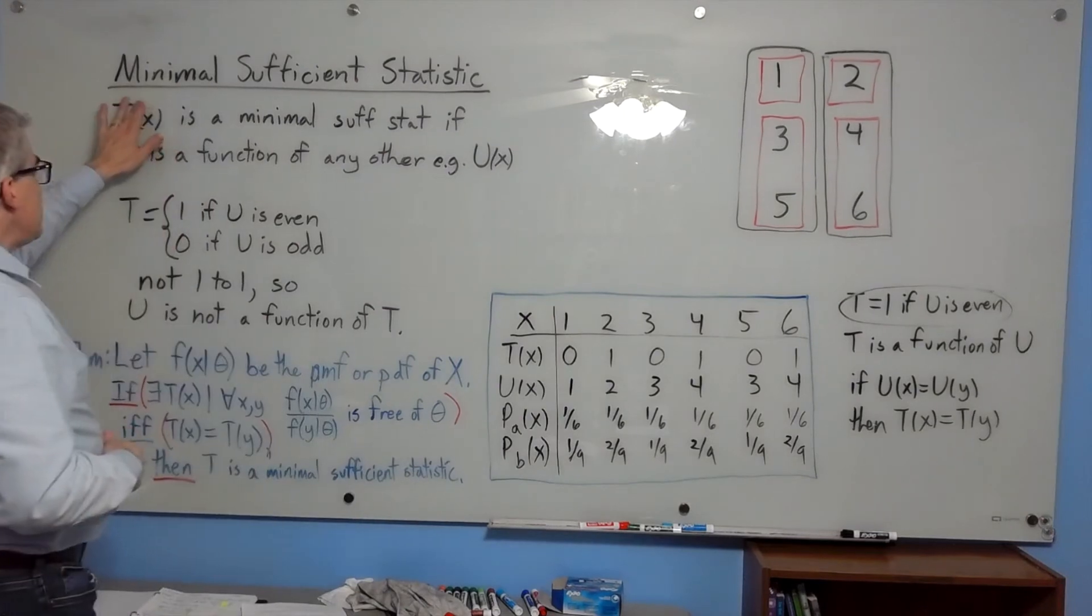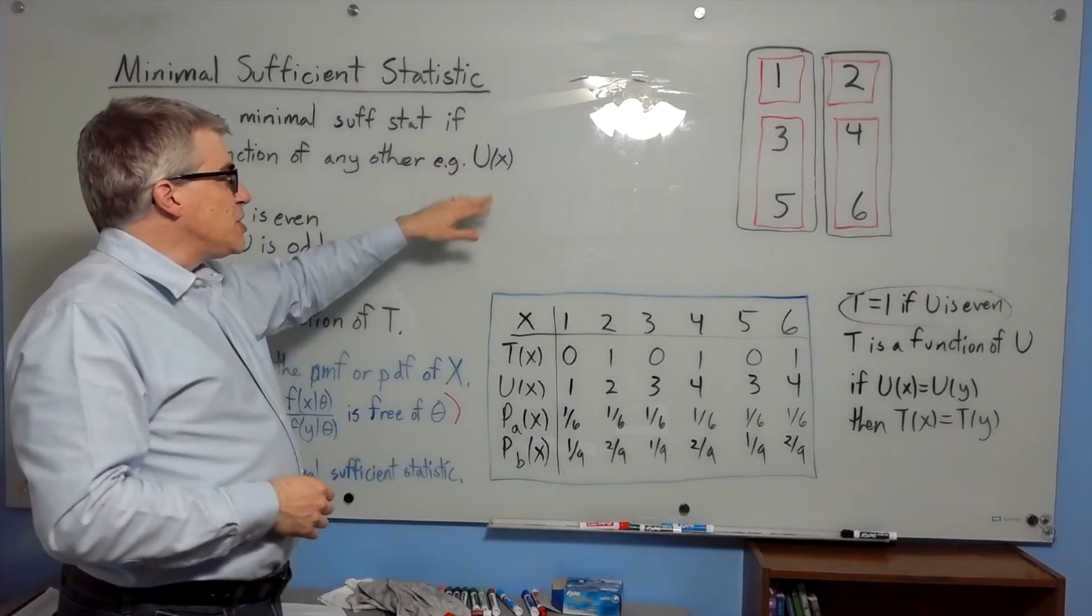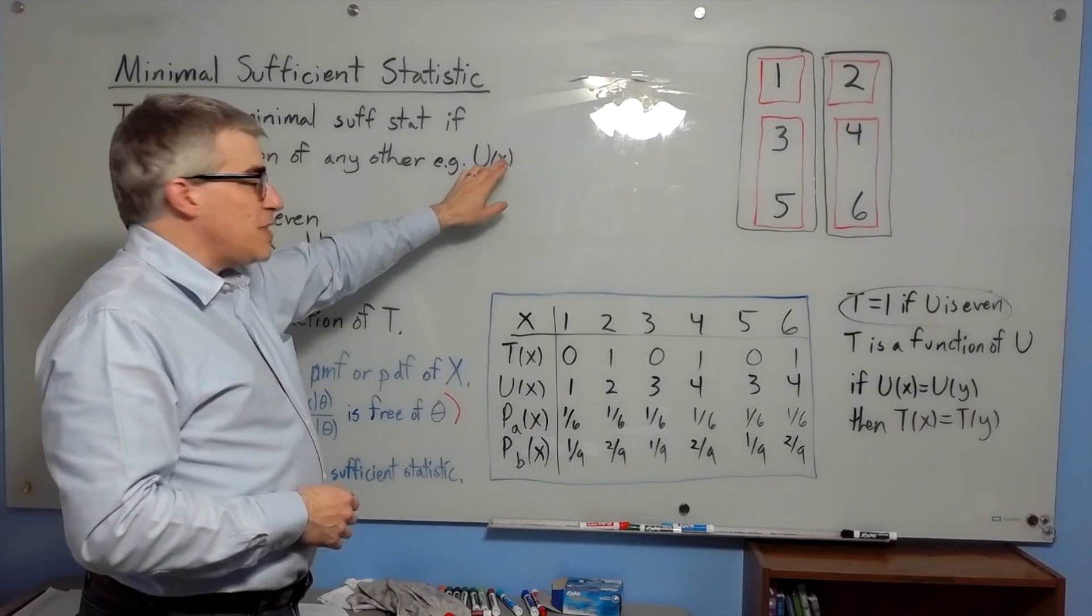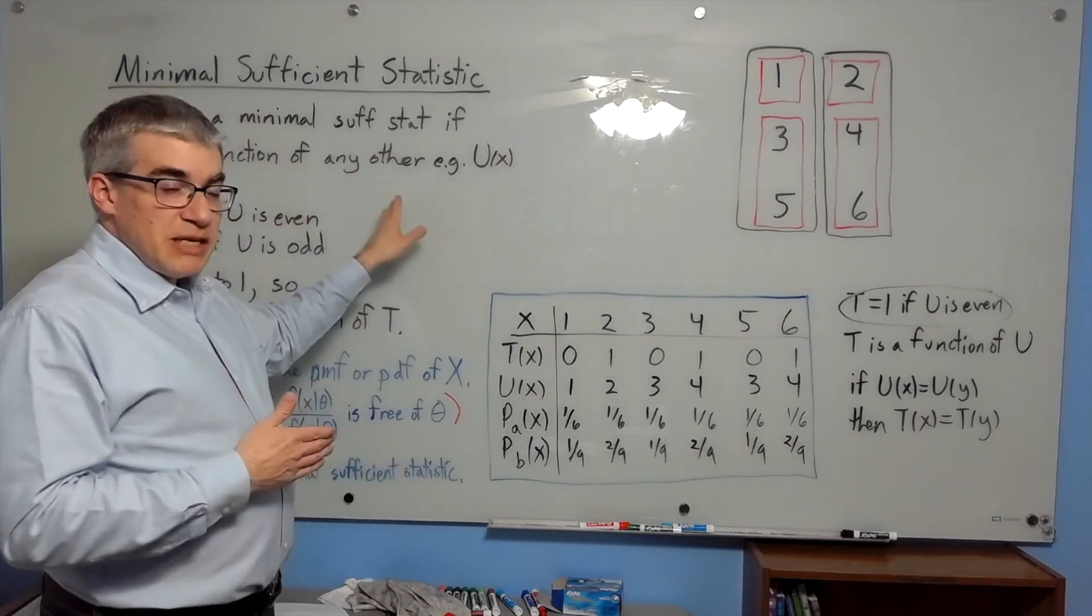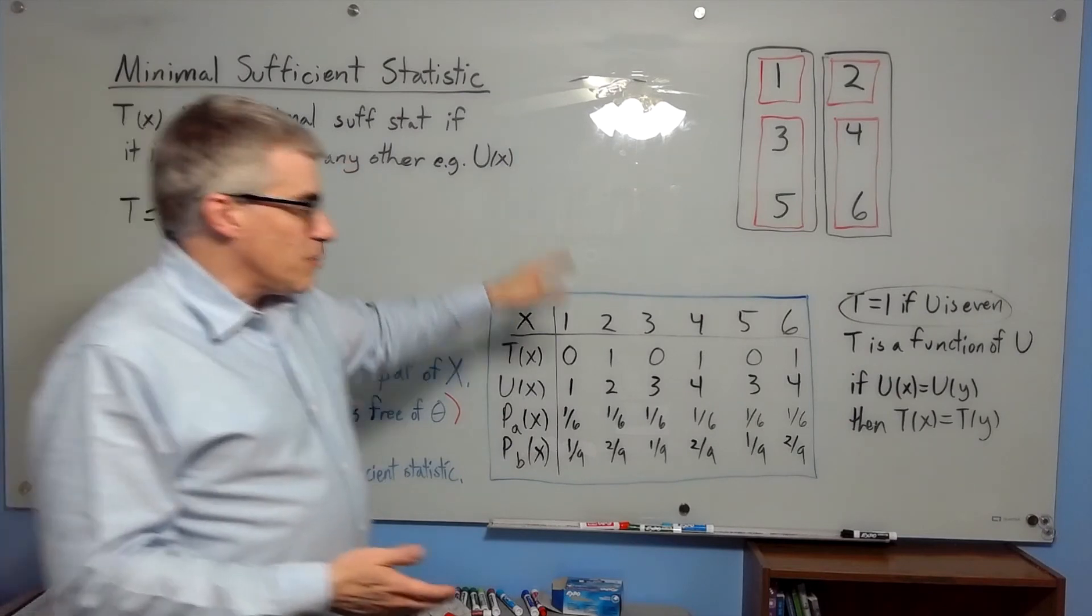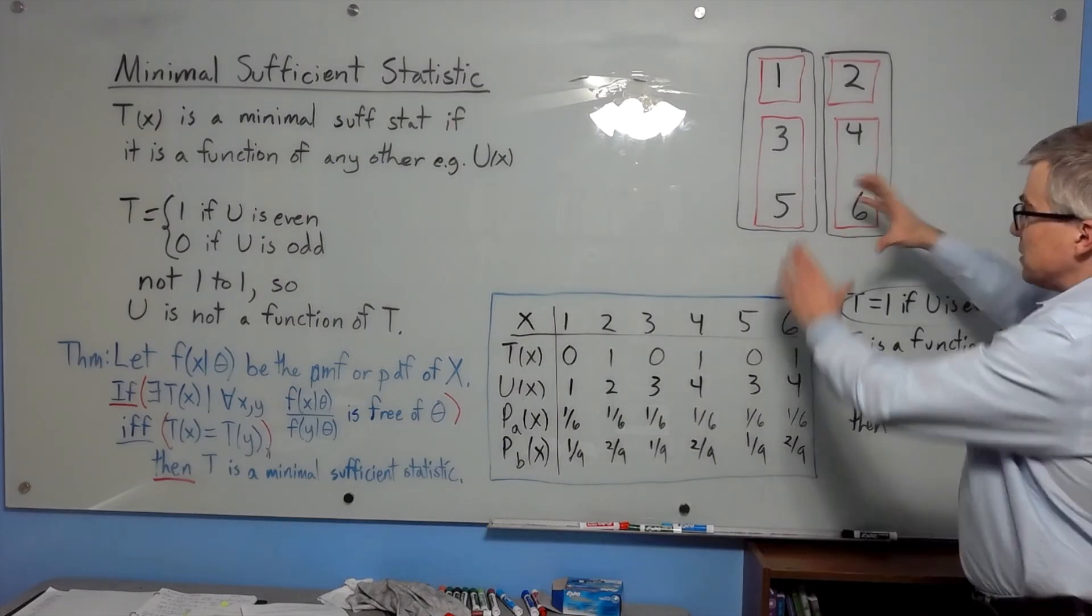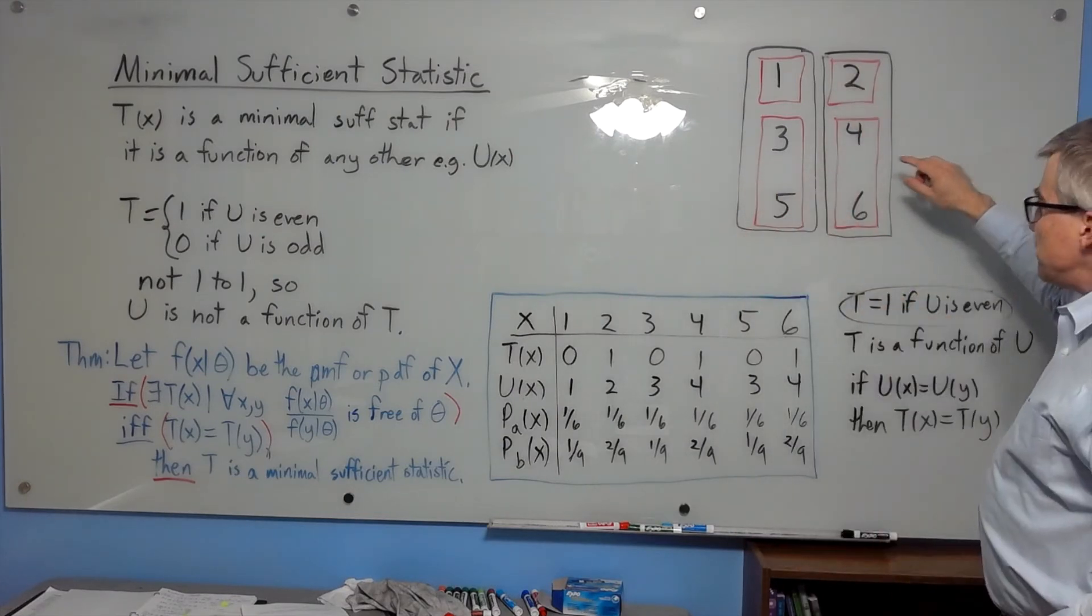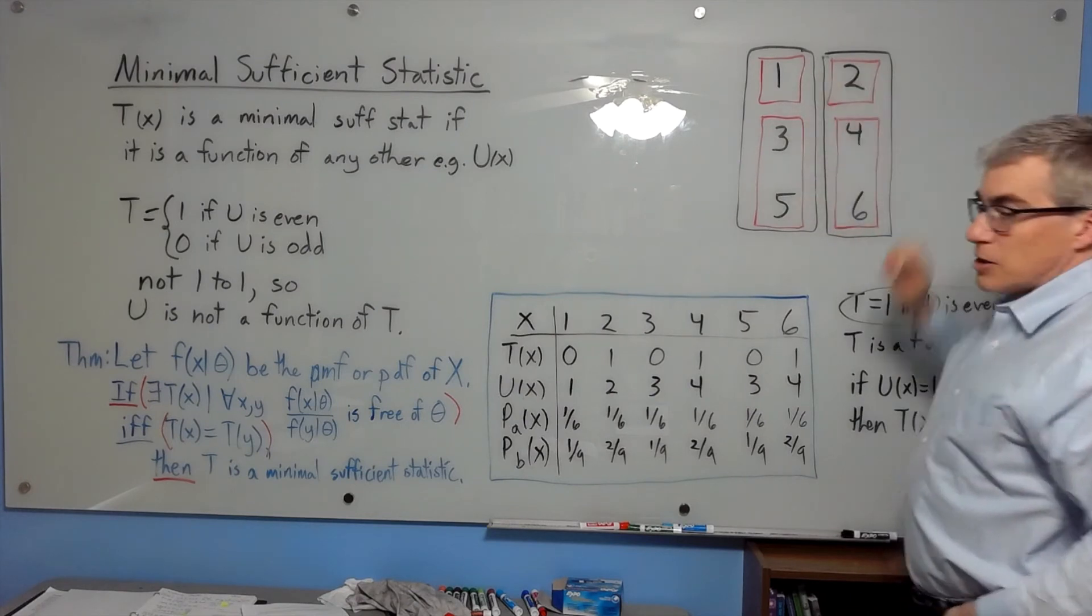Now, what do we mean about t of x being a function of any other? Well, to be a function of it, that means if you have different x's that give the same u, then they also have to give the same t because t is a function of u. So in other words, if u of x equals u of y, then t of x equals t of y. That's what we need for t to be a function of u. What that means visually is that t is a coarser partition. The pieces of t have to contain only entire pieces of u.